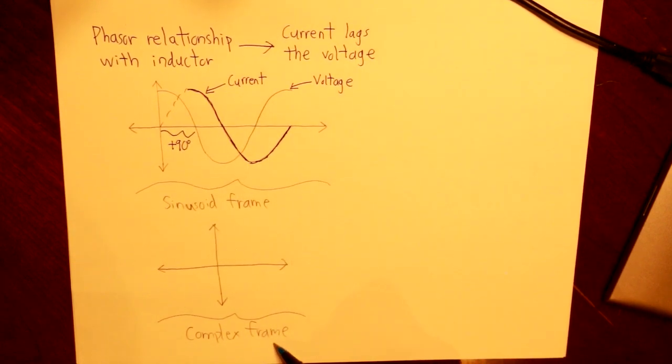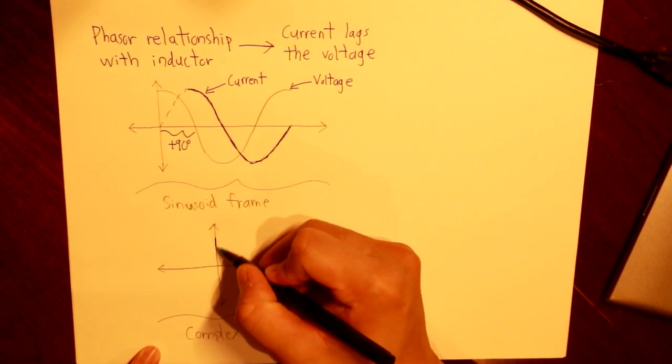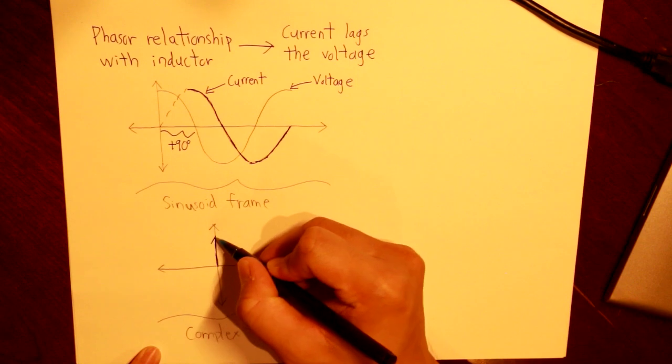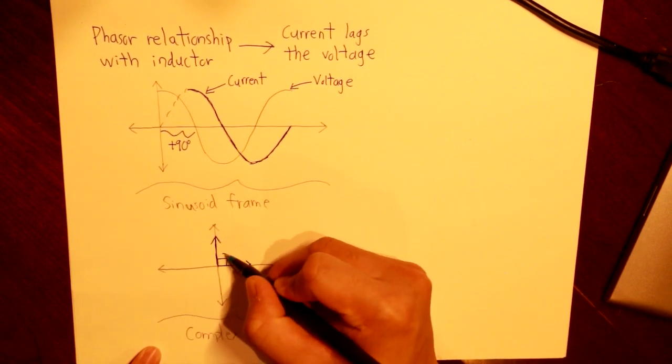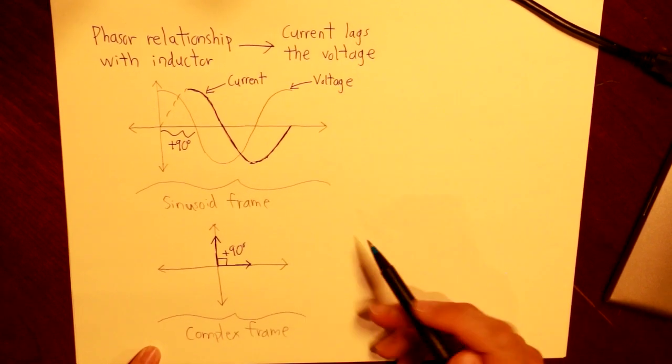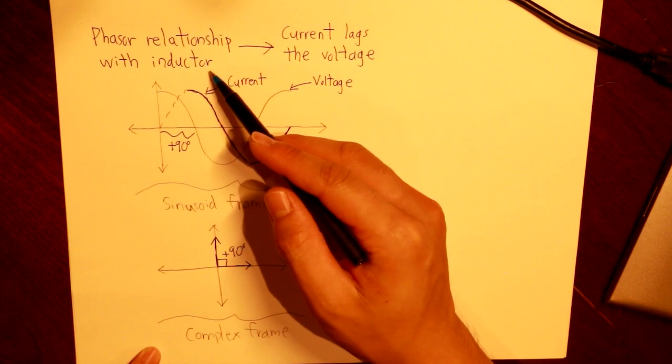And if we draw that in a complex frame, this would be what it looked like. We have the current here, and the voltage here. This is plus 90 degrees. So that's our phasor relationship with our inductor.